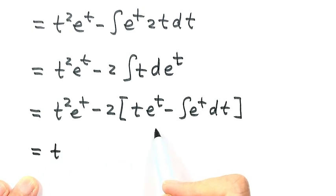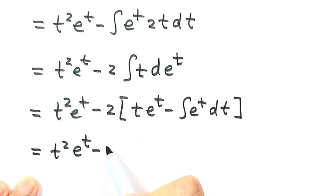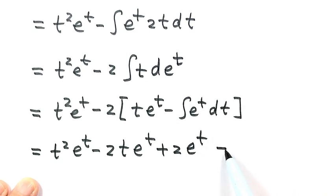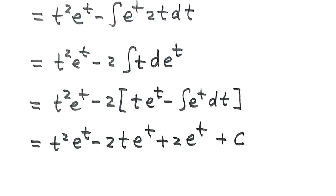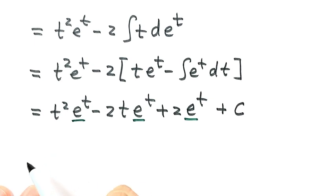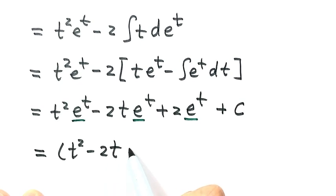Let's simplify this part. Distribute negative 2 to each term: so here just negative 2t e to the power t. Then here positive plus 2 — this integral is just e to the power t. Because it's an indefinite integral, so here plus constant c. We have a common factor e to the power t, so take it out. That gives t squared minus 2t plus 2, times e to the power t, plus c.